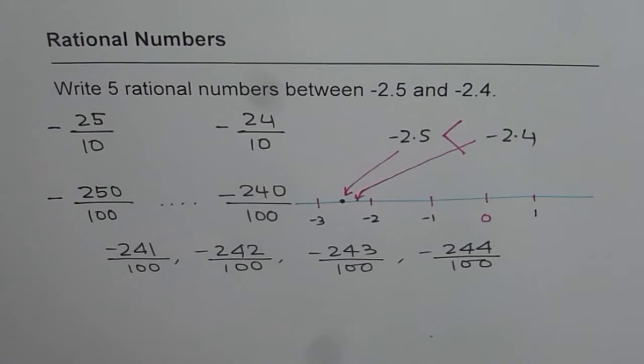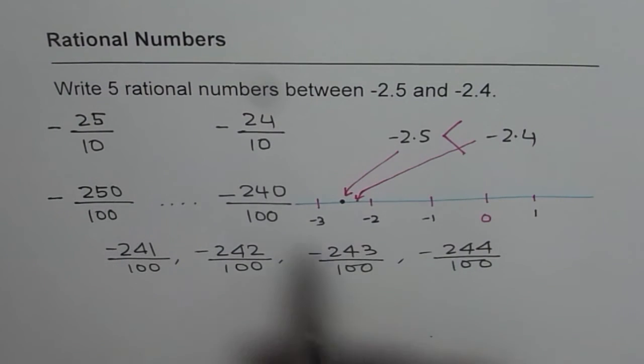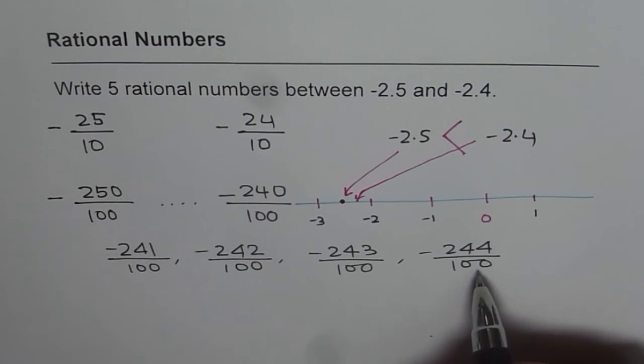Now, if you have to write more numbers, what will you do? Think about it. We could always go one more place. Do you see that? That is to say, we could write numbers between.